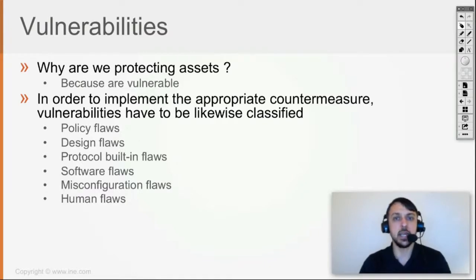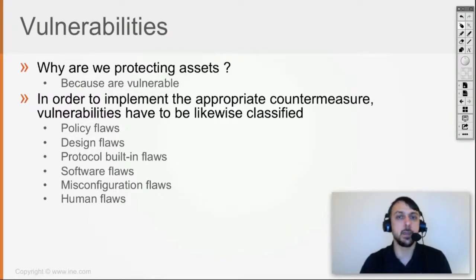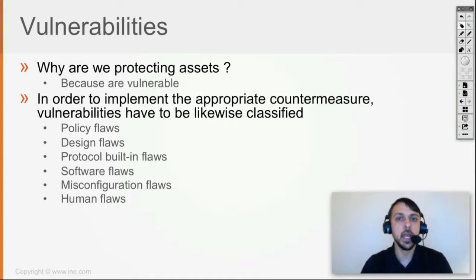Or for example, maybe the security policy states how to create passwords, but doesn't state how to change your password. Which means a user, when changing their password, can end up using a simple password like 'Cisco', because the document guiding the user on how to change their password allows any kind of password. So the user chooses a simple password — that's a policy flaw. We can also have a file policy flaw, for example, where you put files in the network and because of the order of operations within the firewall, more access to the network was given than was required.